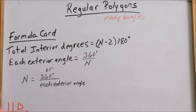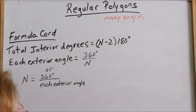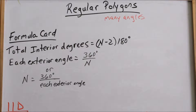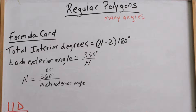We are looking at figures with many angles. A triangle is a polygon, a square is a polygon, a parallelogram is a polygon. An octagon, hexagon, dodecagon, decagon — those are all polygons because they have many angles.